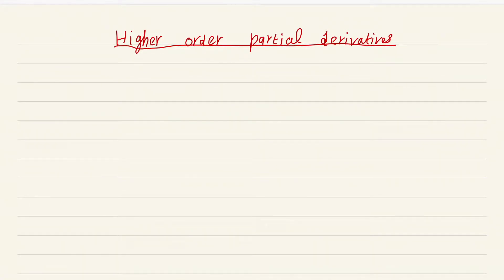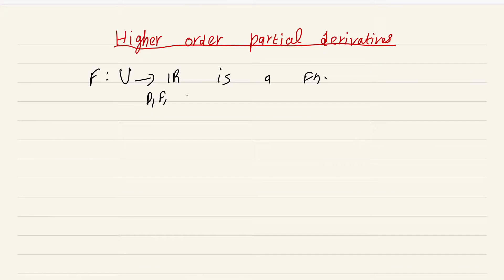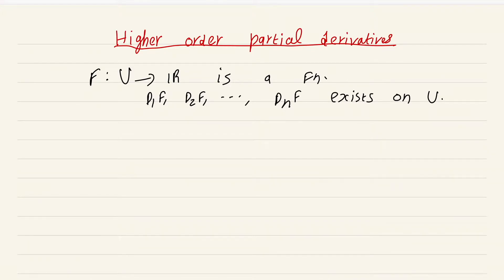In this video, I am going to be talking about higher order partial derivatives. The setting is as always: f from U to R is a function. Suppose the partial derivatives d1f, d2f, ... dnf exist on U. So this function is differentiable with respect to each of the variables throughout U.